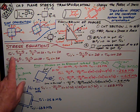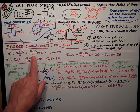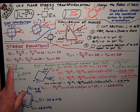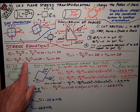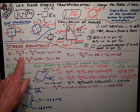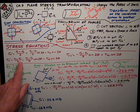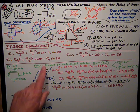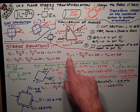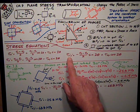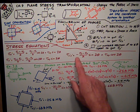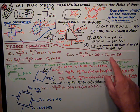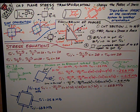Sigma x prime is this expression. Sigma y prime is this expression. Note that this is just plus here and plus here. And for sigma y, it's minus and minus those terms. And tau x prime y prime, the shear stress is equal to negative this term plus this term.